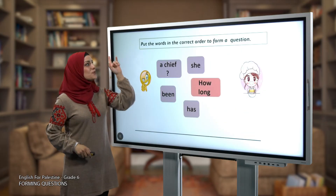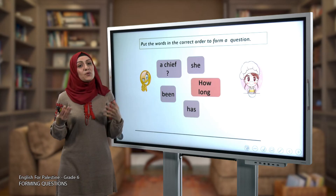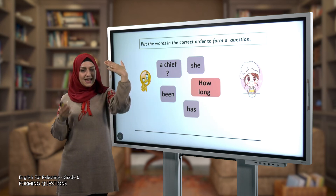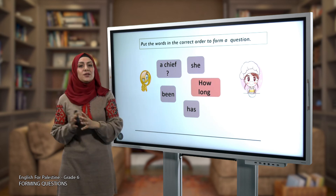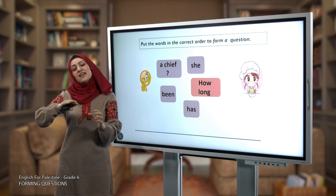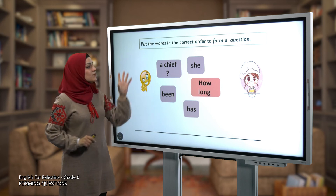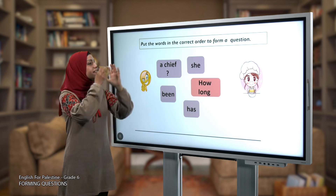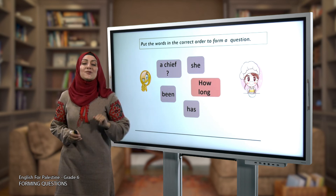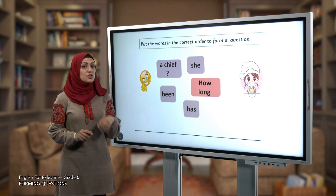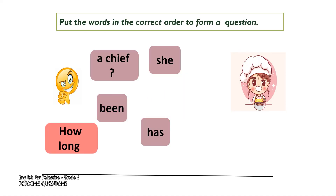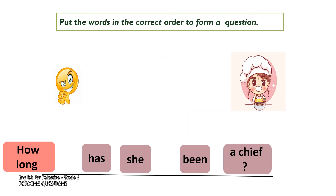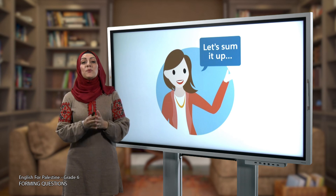In this next question, put the words in the correct order to form a question. When forming a question with 'how long,' put 'how long' at the beginning, then 'has' or 'have' depending on the subject, then the subject, then verb three, and finally complete the question with a question mark. The words are: 'a chef,' 'she,' 'been,' 'how long,' 'has.' The correct order is: 'How long has she been a chef?'